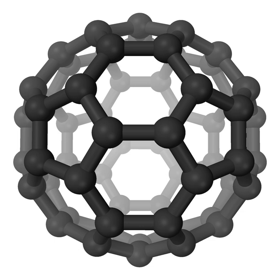The extensive dark areas on the trailing hemisphere of Saturn's moon Rhea are thought to be deposited tholins. Neptune's moon Triton is observed to have the reddish color characteristic of tholins. Triton's atmosphere is mostly nitrogen, with trace amounts of methane and carbon monoxide.